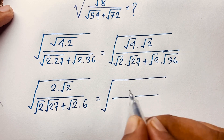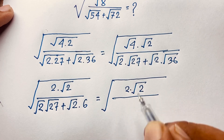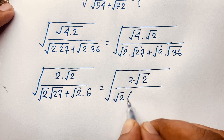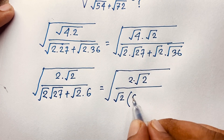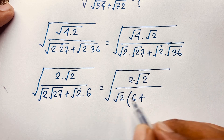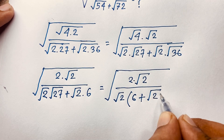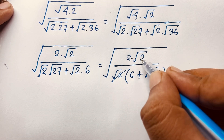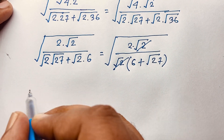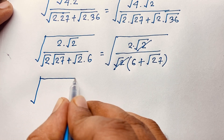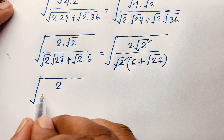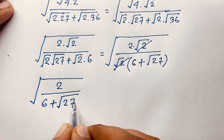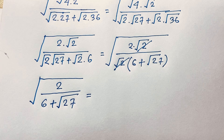Now it will be 2 square root 2 over square root 2 times square root 27, plus 6 square root 2. Square root 2 is common, so dividing through: we get 2 over 6 plus square root 27, after square root 2 cancels out.